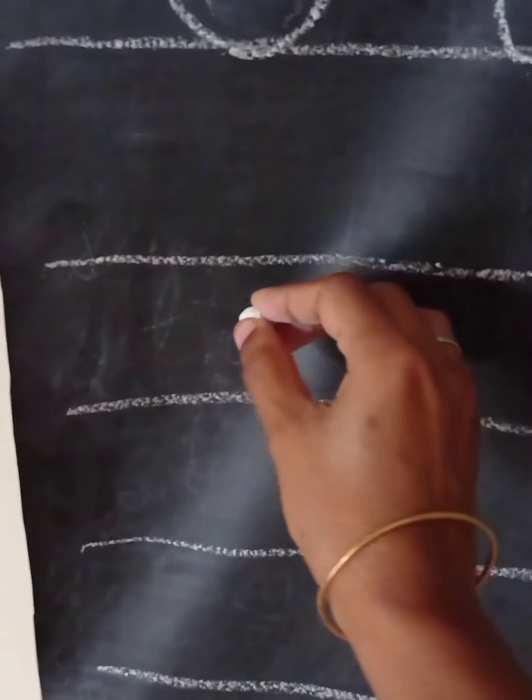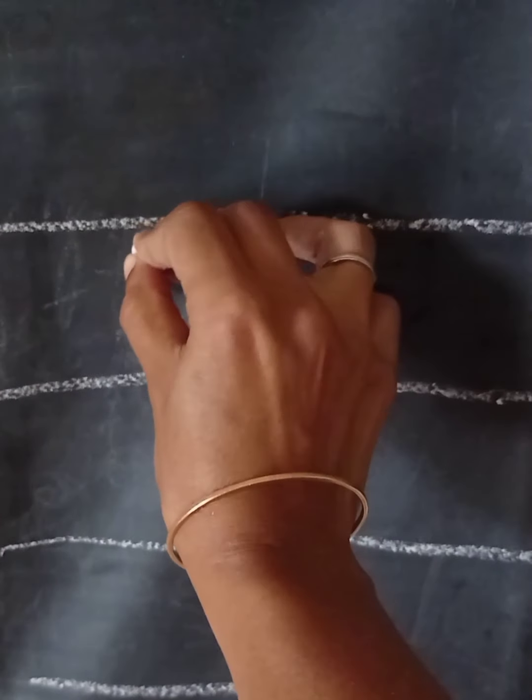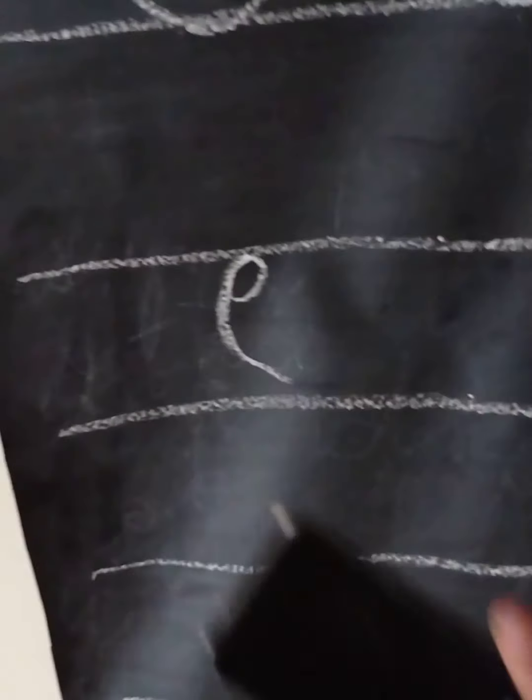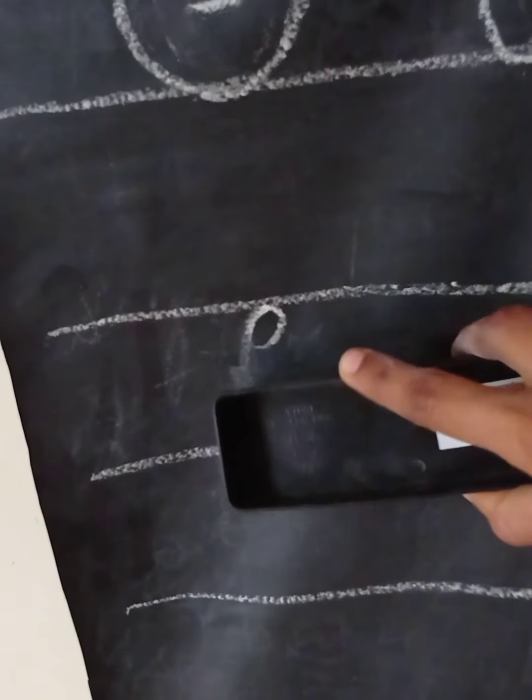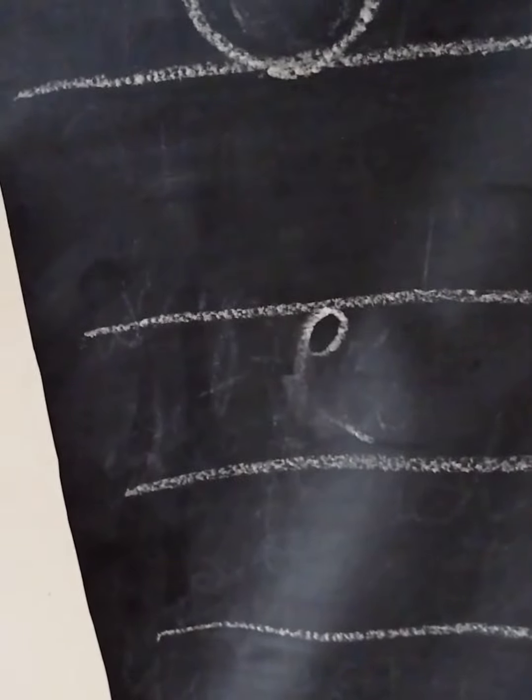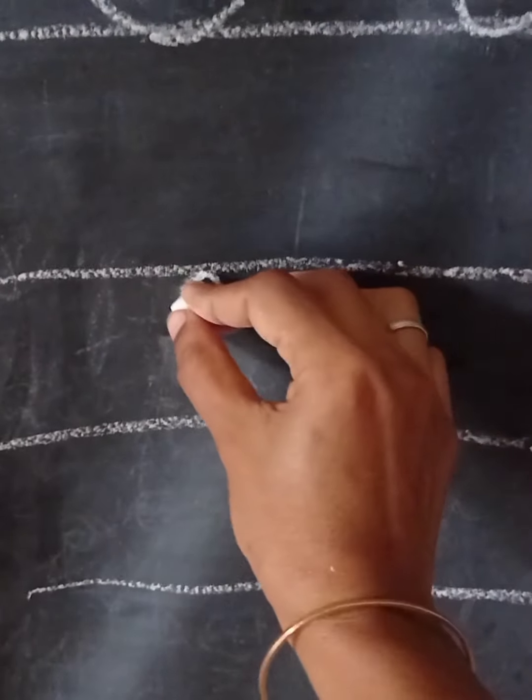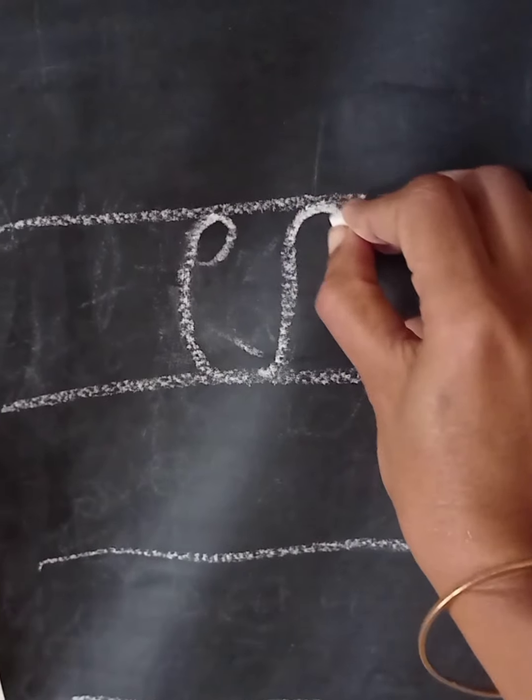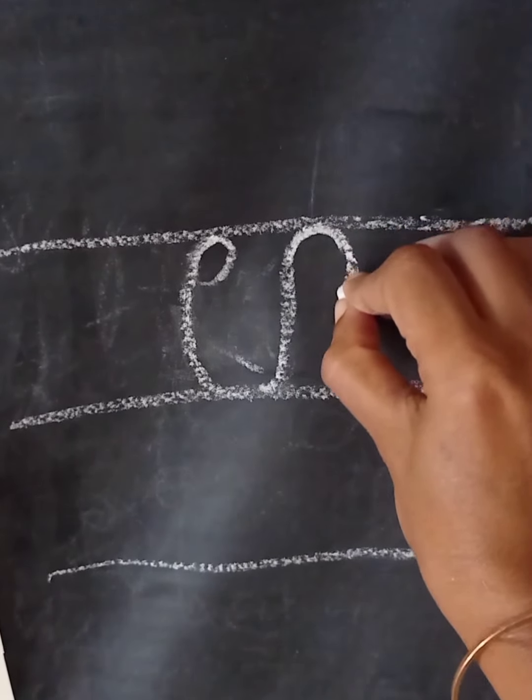The next is U. The letter U as in Uraga. Uraga means snake. This is U.